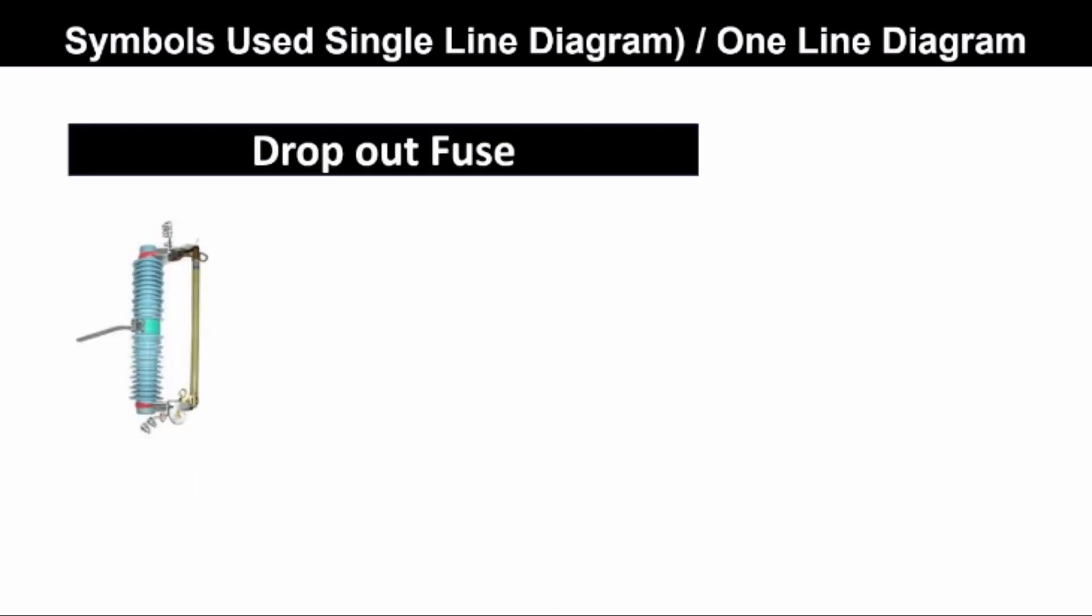Dropout fuse or duo fuse. This is the dropout fuse and its symbol is this, or it can be represented as this or this.